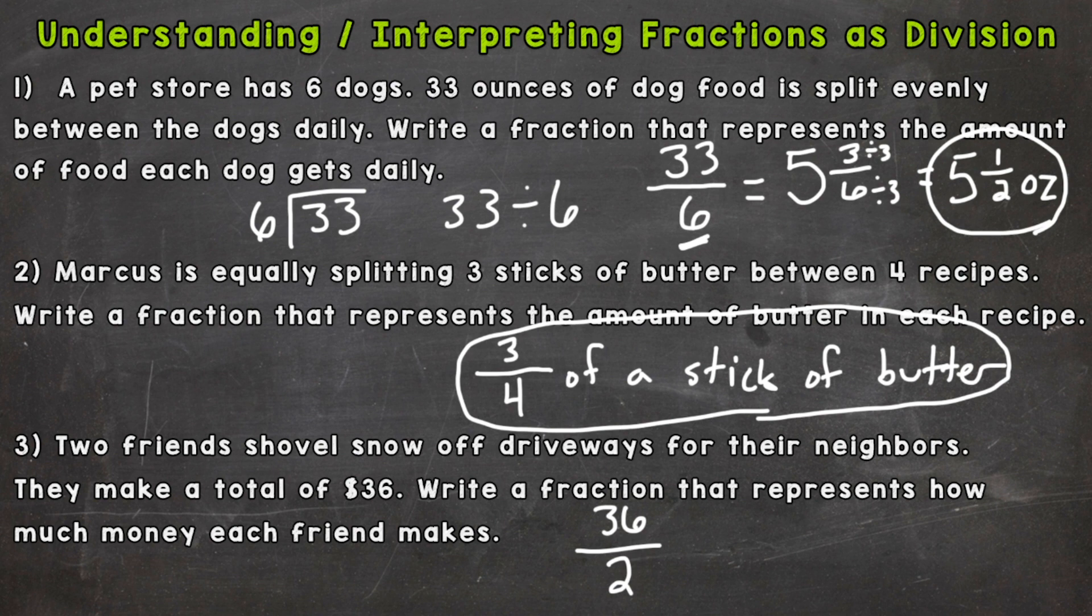That's our division problem but it's an improper fraction, so we don't want to leave it like that. We need to do 36 divided by 2. How many whole groups of 2 can we pull out of 36? The answer to that is 18 and there is no remainder. So each friend made 18 dollars.